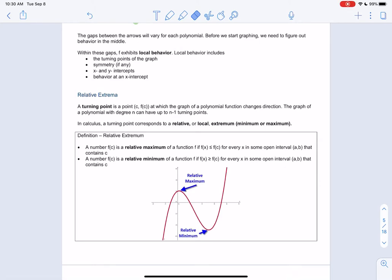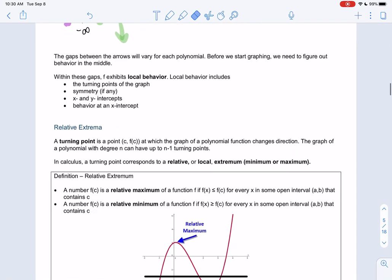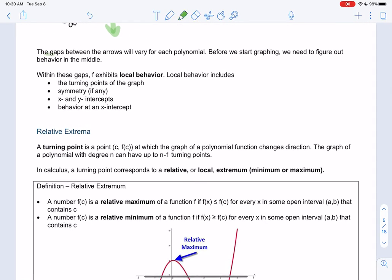All right, welcome back to 3.1. We've already talked about end behavior, and so now in this video we want to figure out what's going on in between. So the gaps between those arrows will vary for each polynomial.